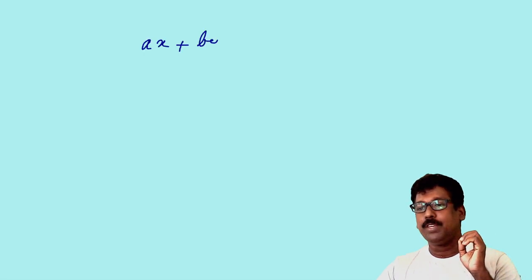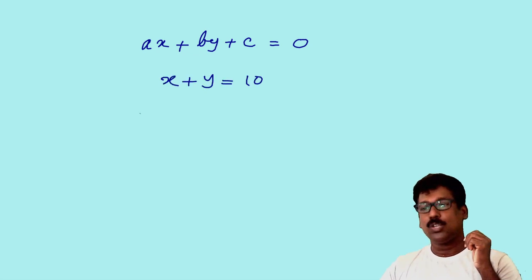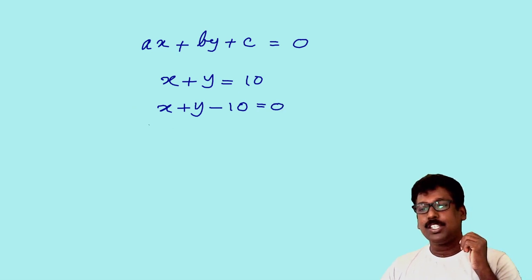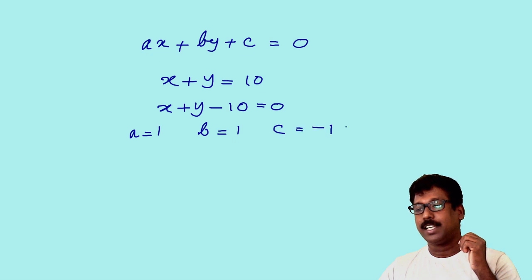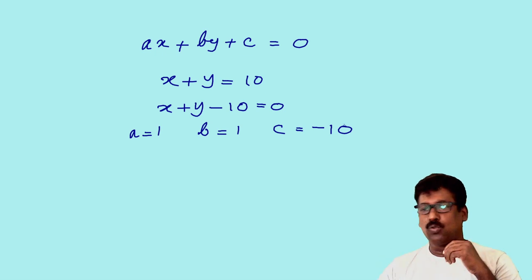The standard form of a linear equation in two variables is ax plus by plus c is equal to 0. The equation x plus y equals 10 can be written as x plus y minus 10 equals 0. Here a equals 1, b equals 1 (coefficient of y), and c equals negative 10.